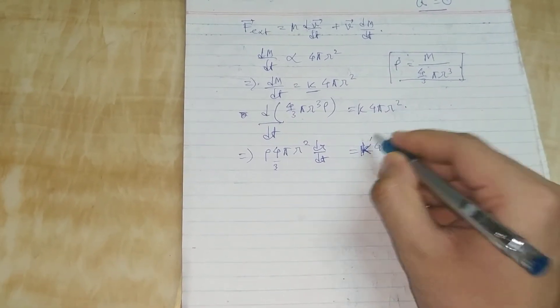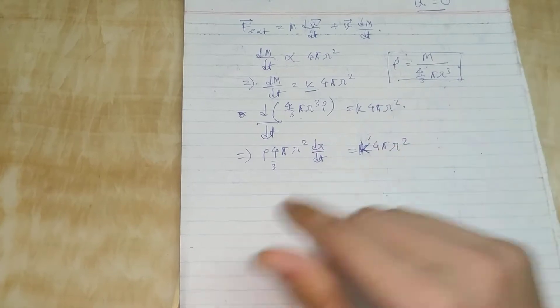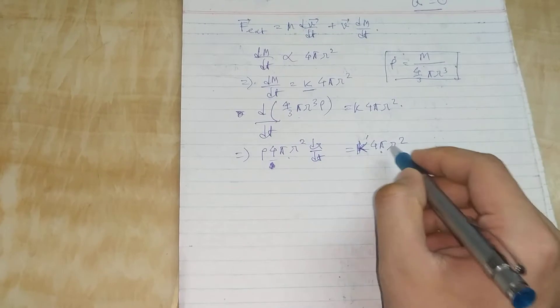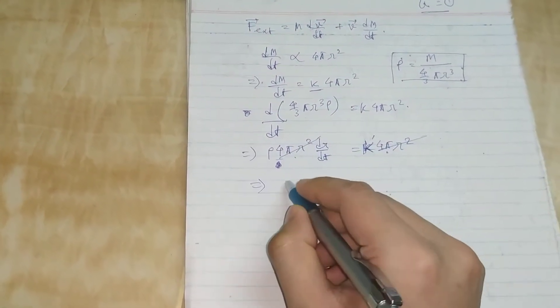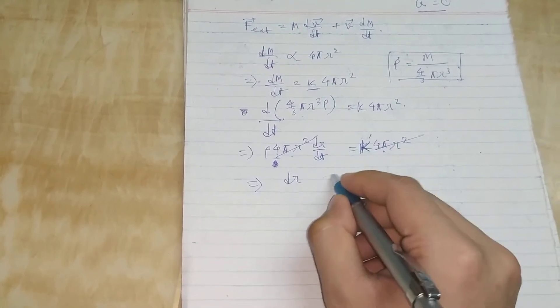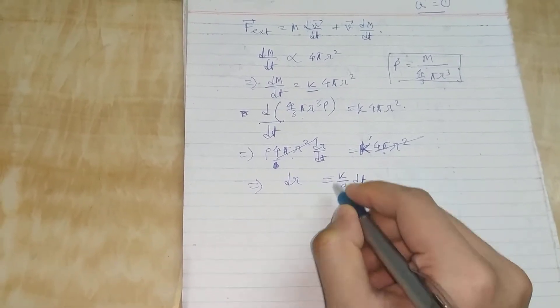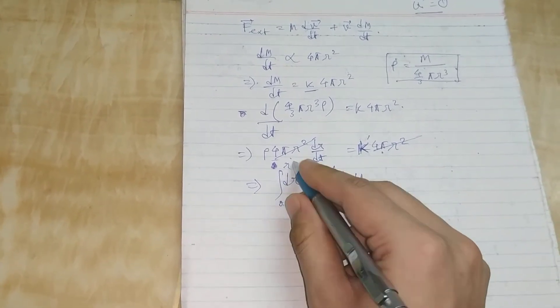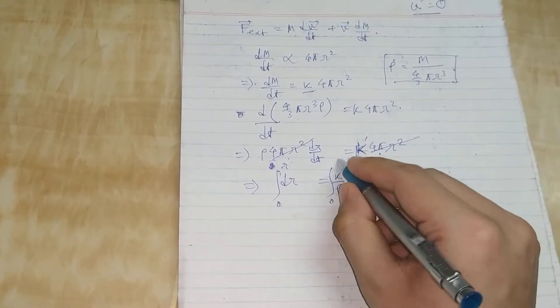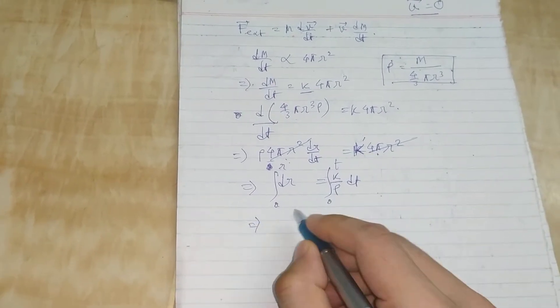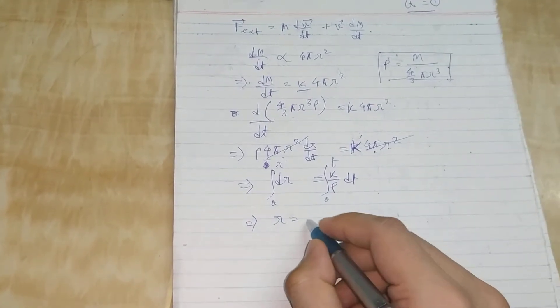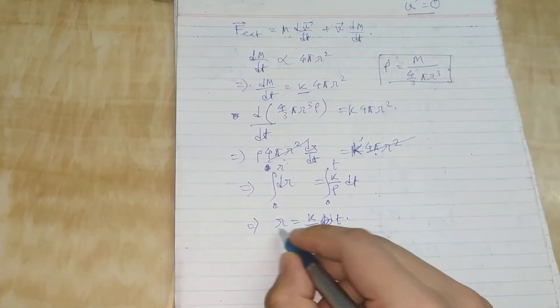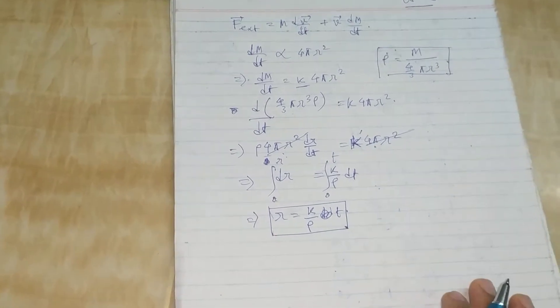We balance these two sides. The R² terms cancel out and we integrate. The limits are from 0 to R, and here the limits are 0 to t. We get R = Kt. This is the relation we will need later.